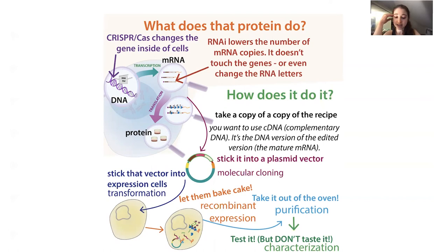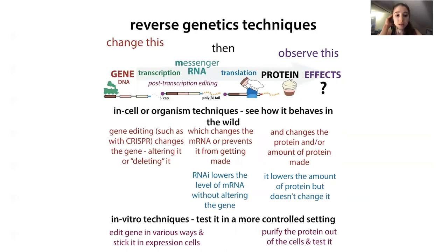To make these changes, we can either alter the gene itself — directly changing the genotype — or we can change the levels of the messenger RNA. When doing it at the gene level, we're making permanent changes. When doing it at the messenger RNA level, we're just changing the number of copies made or how stable those copies are.